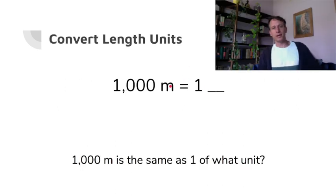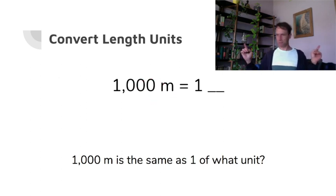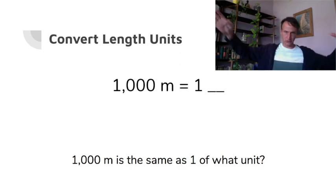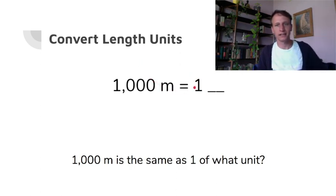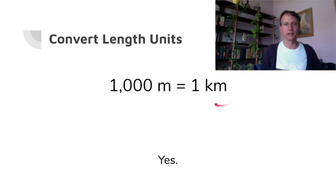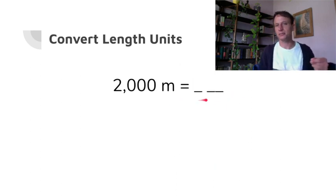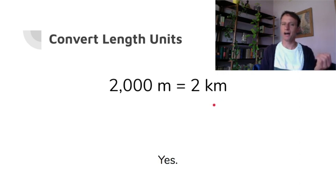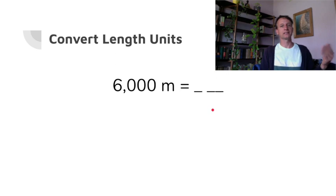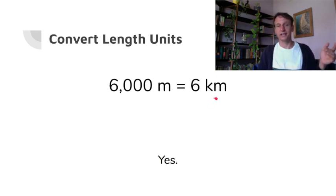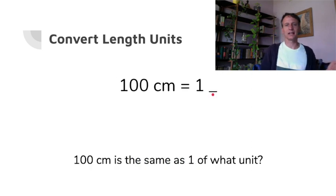Let's warm up and get the engine going. One thousand meters — remember what a meter stick looks like? One thousand of those is a long way to run; it's one kilometer. So two thousand meters is two kilometers, three thousand meters is three kilometers, and six thousand meters — that's a really long way to run — is six kilometers.